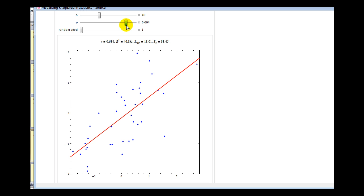And watch what happens as we increase the value of r. The points will become more clustered around the red line, and as we do that, r increases, and so does r squared. Here we have a very strong positive correlation. R is equal to .99, and r squared is equal to 98.1 percent.